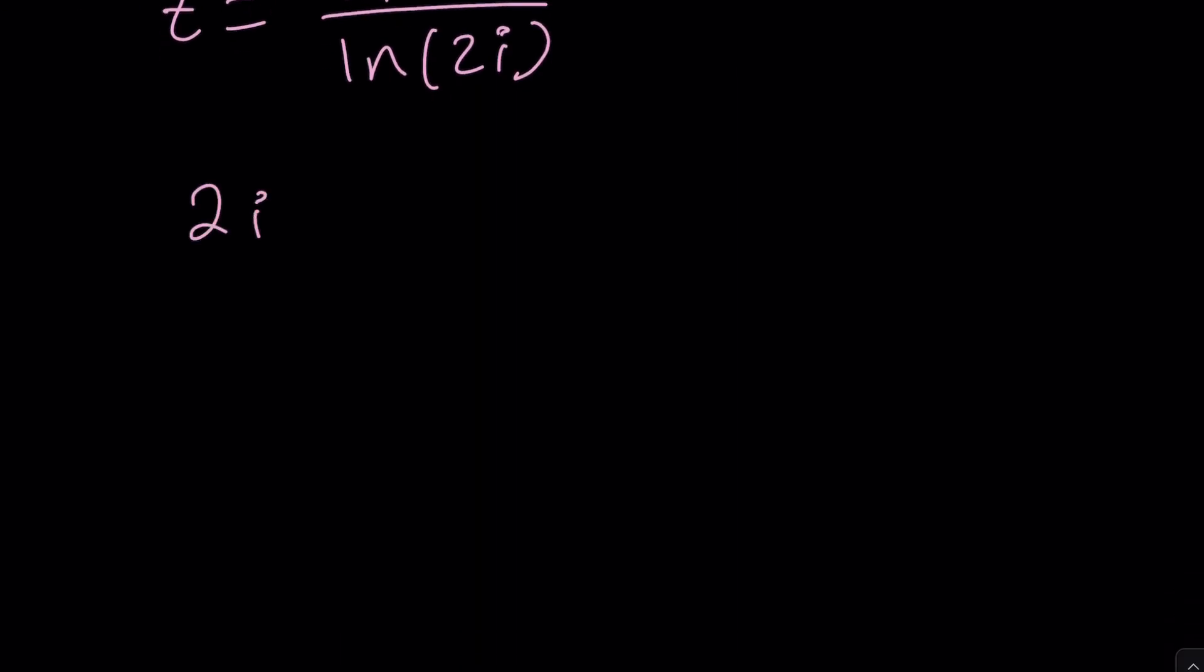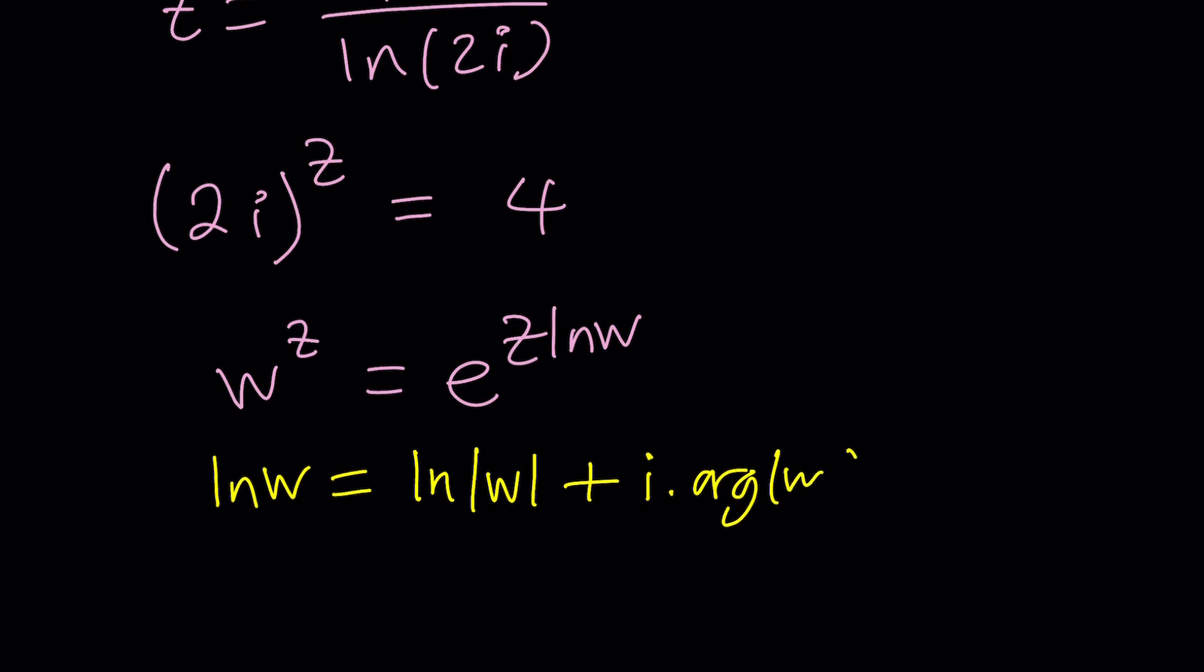So, we have 2i to the Z equals 4. And here's what we're going to do. Whenever you have something to something else, you can write it as E to the power of Z ln W. So, basically, two things we need to talk about. The complex exponentiation, when you have a complex number to a complex power, you can write it as an exponential using E as a base, right? The exponential function, EXP. And then, we have to deal with the log of a complex number. So, what is ln W? ln W is defined as ln absolute value of W plus i times the argument of W. Argument is the angle or the argument, right? This is the angle. So, whenever you plot a complex number, it makes an angle with the x-axis, or we call that the real axis, and this is the imaginary. And, of course, its distance from 0 is called the modulus or R. So, that's what we need to do here.